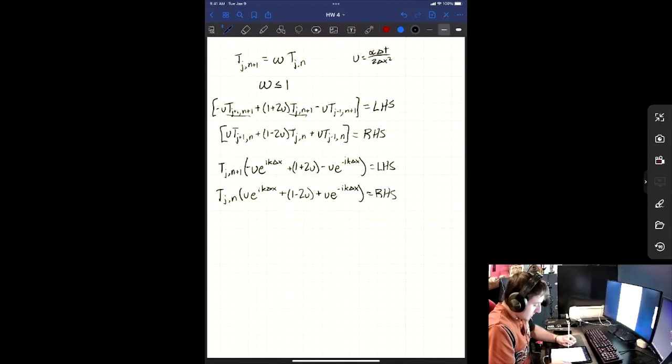Alright, and so now what we can do is we want to isolate this t sub j comma n plus 1 term. So how we're going to do that is we're going to divide this full term on both sides. So we are going to have t j n right here.